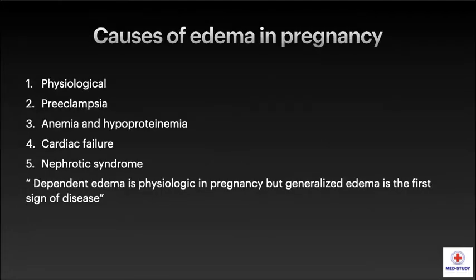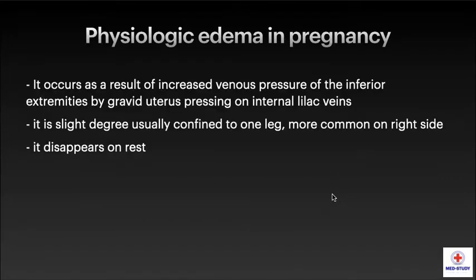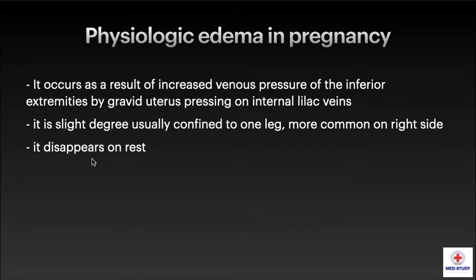Causes of edema in pregnancy include physiological edema, preeclampsia, anemia, hypoproteinemia, cardiac failure, and nephrotic syndrome. Dependent edema is physiologic in pregnancy, but generalized edema or anasarca is the first sign of disease. Physiologic edema in pregnancy occurs as a result of increased venous pressure of the inferior extremities due to the gravid uterus pressing on the internal iliac veins. It is a slight degree of edema, usually confined to one leg, more commonly the right side, and disappears on rest.